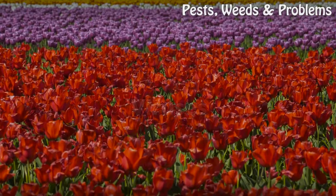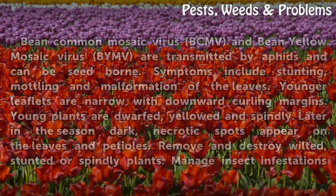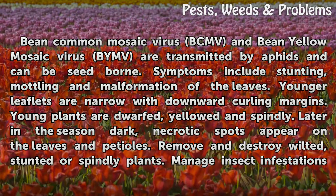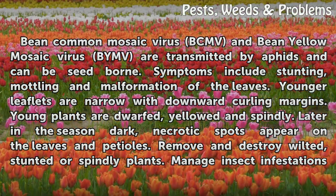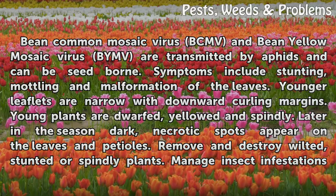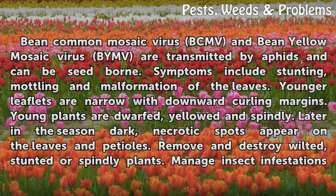Viruses. Bean Common Mosaic Virus (BCMV) and Bean Yellow Mosaic Virus (BYMV) are transmitted by aphids and can be seed-borne. Symptoms include stunting, mottling, and malformation of the leaves. Younger leaflets are narrow with downward-curling margins. Young plants are dwarfed, yellowed, and spindly. Later in the season, dark necrotic spots appear on the leaves and petioles.